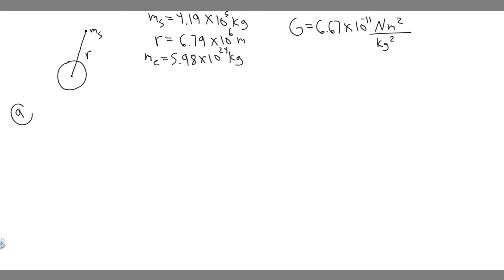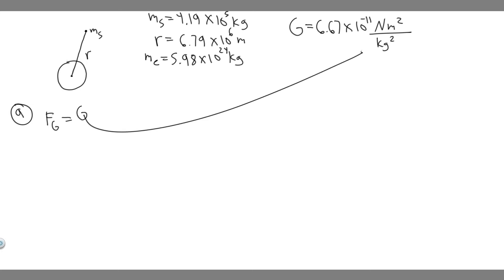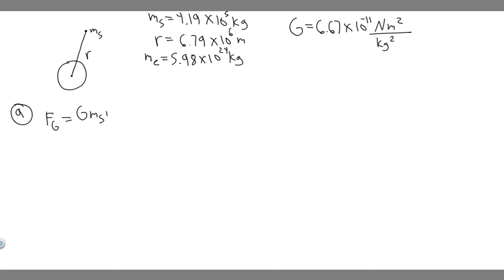Let's start with A. What we're trying to do is find the gravitational force exerted by the Earth on the space station. There's a formula you need to know which solves for the gravitational force between two objects — in this case, the space station and the Earth. This is Newton's universal law of gravitation: F sub G equals G times M1 times M2 divided by R squared, where M1 and M2 are the masses of the two objects, and R is the distance from center to center, squared.